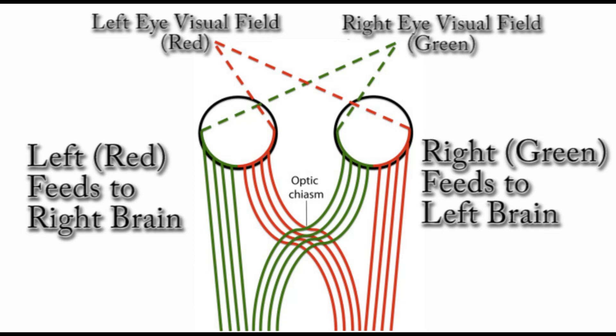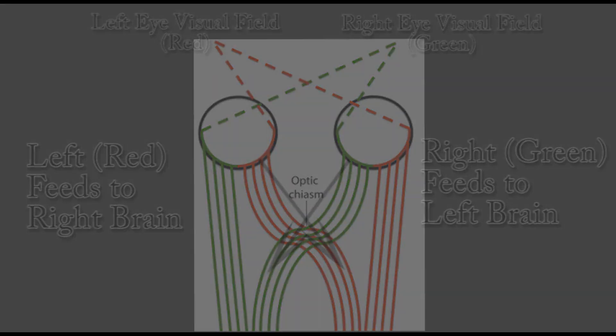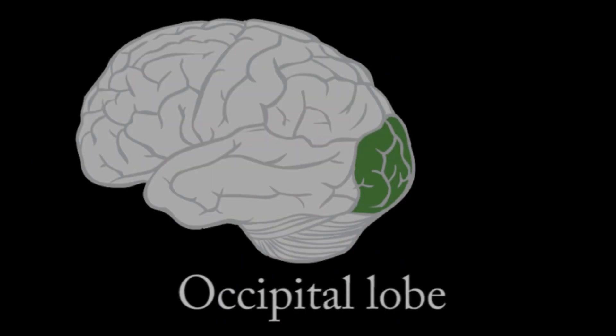We might term this as 'inside out,' as the left goes right and the right goes left. The signal finishes in the back of the brain, indicating that the interaction is not only upside down and inside out, but backwards.